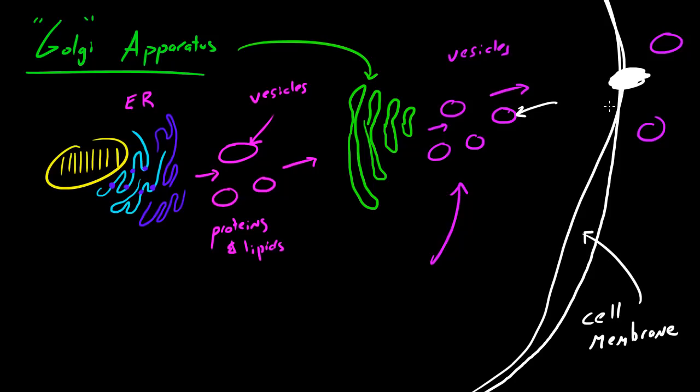So one last time, the Golgi apparatus. In order to understand that, you need to understand the entire process of what happens. First of all, what the smooth ER does and the rough ER is it makes proteins and lipids, and when it's done making those, it gets packaged up into vesicles and moved along to the Golgi apparatus which is right here.